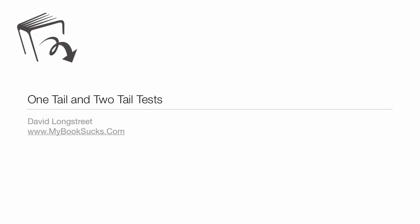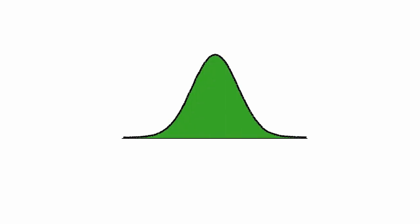In this tutorial I'm going to discuss one-tail and two-tail tests. We set this up by drawing a normal bell curve, which represents 100% of all possible events. Right in the middle is the population mean, and we use the Greek letter mu — it looks kind of like a U, but we call it mu.